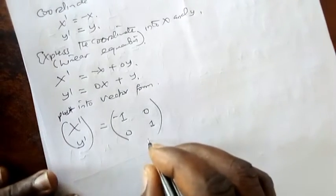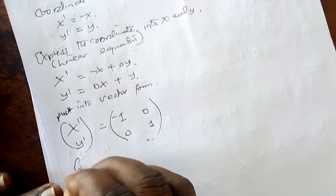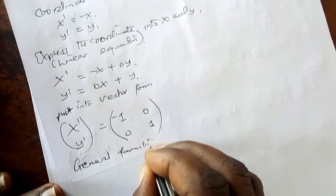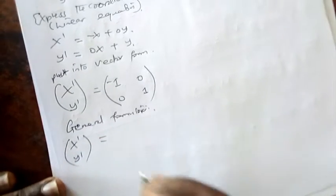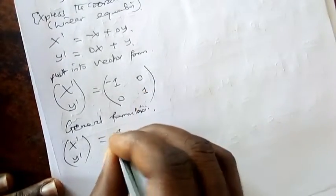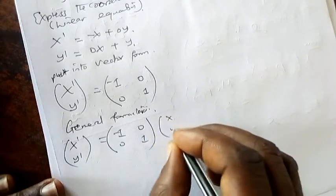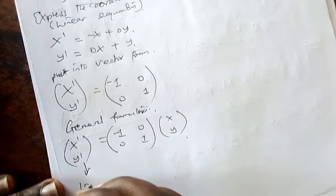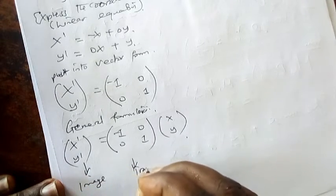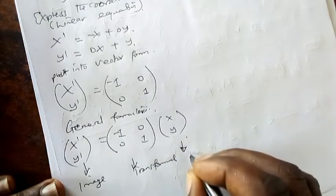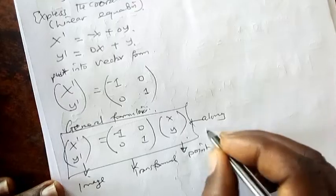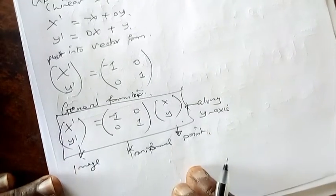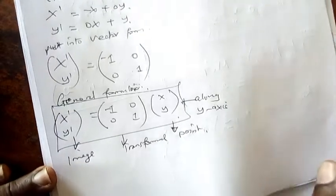From here now, this we call the transformation. This here, the transformation. This number we write now as the general formula that you use, the general formula that you use all the time when you want to find the image along the y-axis. The general formula says (x', y') equals you take your transformation, this is a transformation right: negative 1, 0, 0, 1, this way, then (x, y). So here we call this the image, this we call the transformation or the transformation matrix, but this one we call the given points. This here is the general formula that we use.